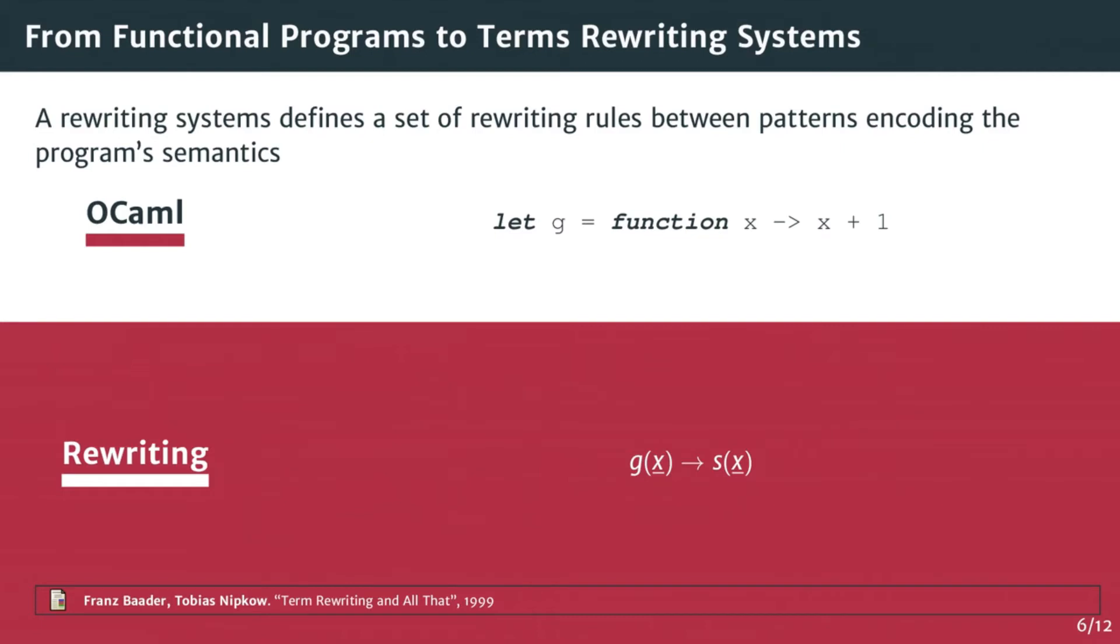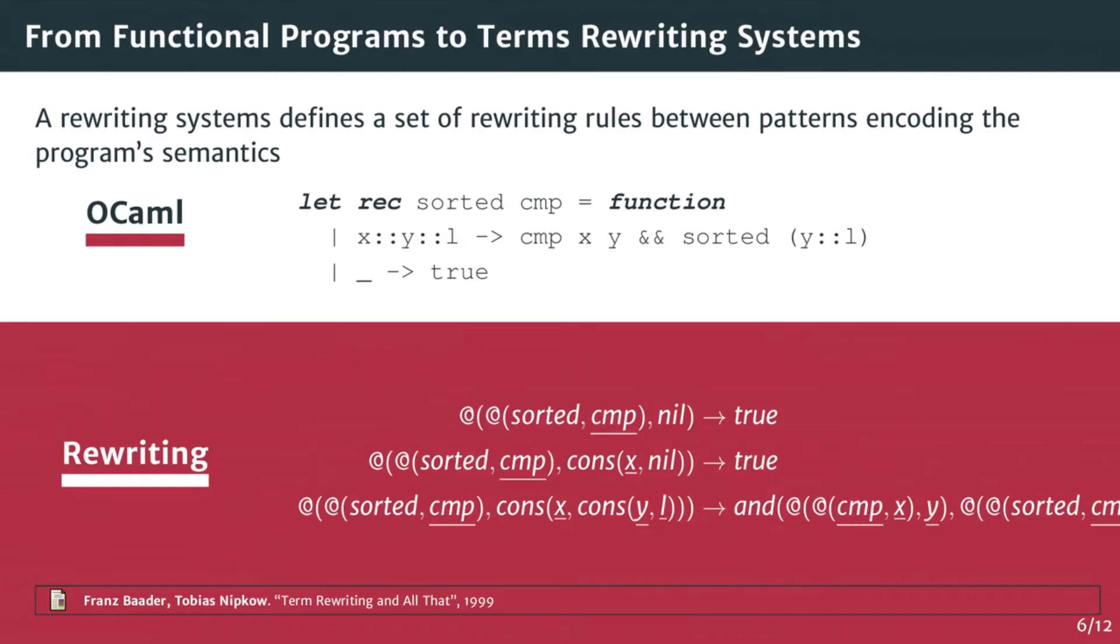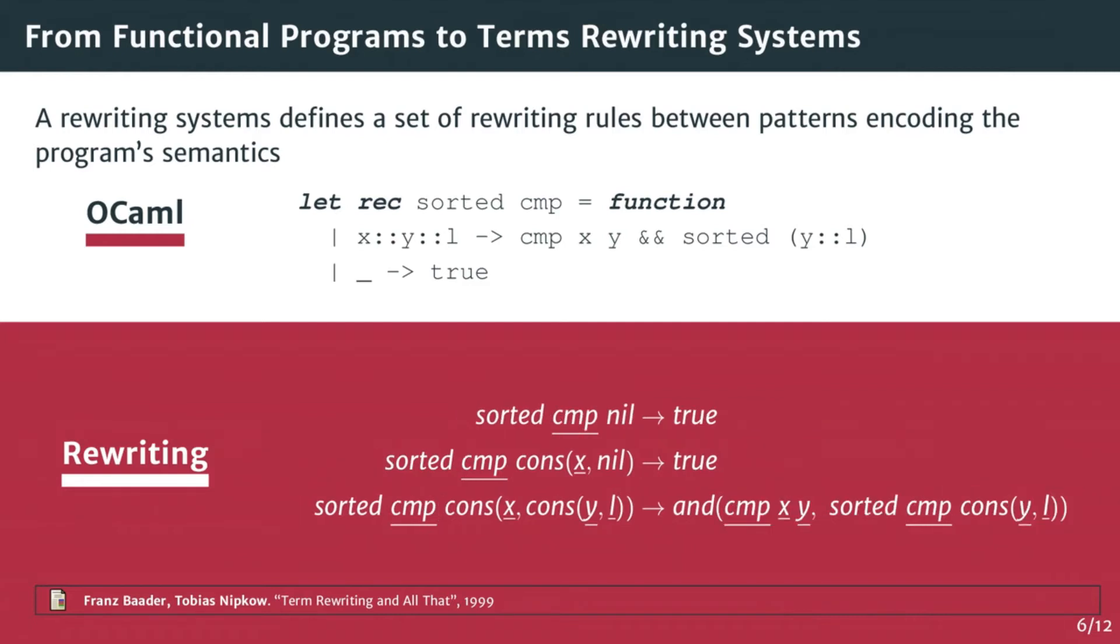A term rewriting system defines a set of rewriting rules between patterns that encode the program's logic. Here is an example of the OCaml program defining the sorted predicate function on top, translated into a rewriting system on the bottom. Because there are a lot of function applications, you see a lot of at symbols, which takes a lot of room and is hard to read. To simplify, we will write a space between the function and its parameters instead of at. Underlined elements are the variables of the patterns. We see that each pattern matching rules on the top is translated into one or more rewriting rules on the bottom.